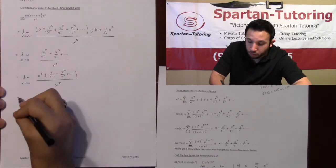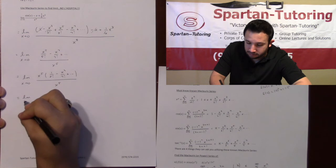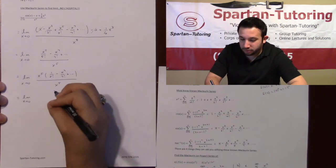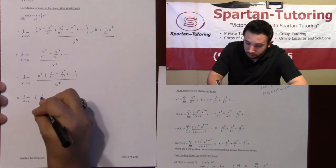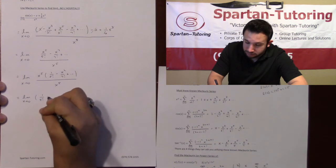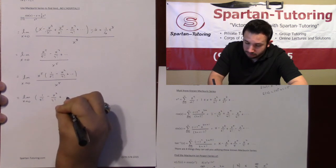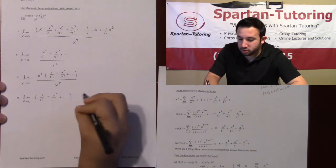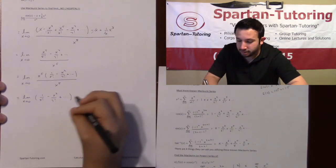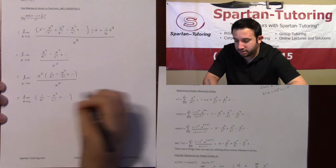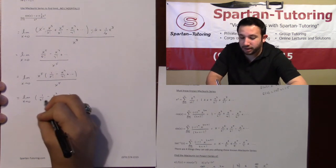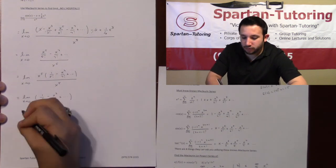Once those x to the 5th cancel, you'll have the limit as x approaches 0 of 1 over 5 factorial minus x squared over 7 factorial and so forth. But all of these remaining terms have x's in them. Everything goes to 0 except the 1 over 5 factorial.